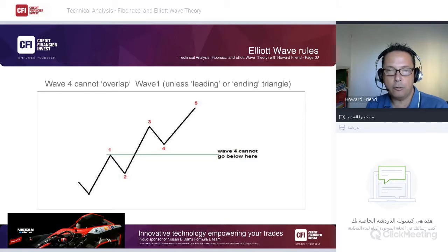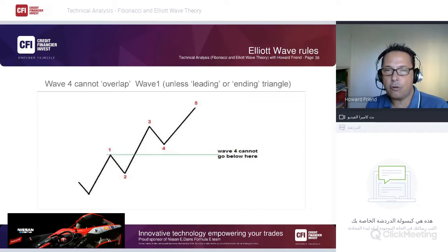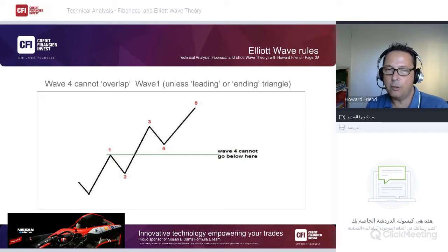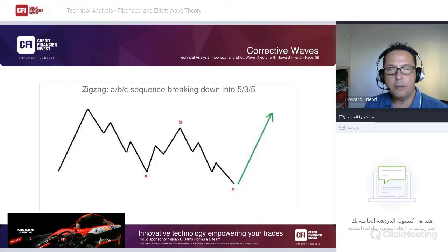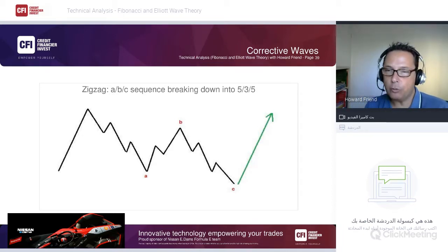The exception to the fourth/one overlap rule is leading or ending triangles — more complex patterns with overlapping waves, covering ending diagonals in wave five or wave C, and leading diagonals. These are more advanced Elliott structures. Most of the time, look for wave four not overlapping wave one.